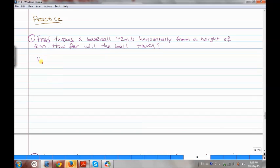From a height of two meters, how far will the ball travel? So let's take out the givens: VIX is given, which is 42 meter per second. The delta Y is 2 meter, because the height is the delta Y.